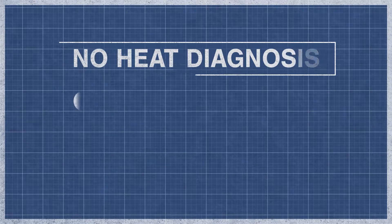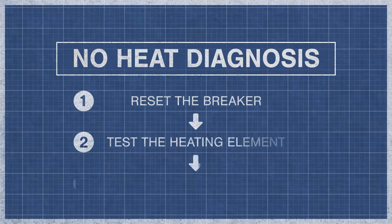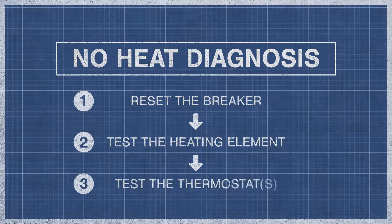When a dryer fails to produce heat, it is best to eliminate the potential problems step by step. For an in-depth guide, watch the videos below. If you've reset your breaker and your dryer still doesn't have heat, then move on to the continuity test.